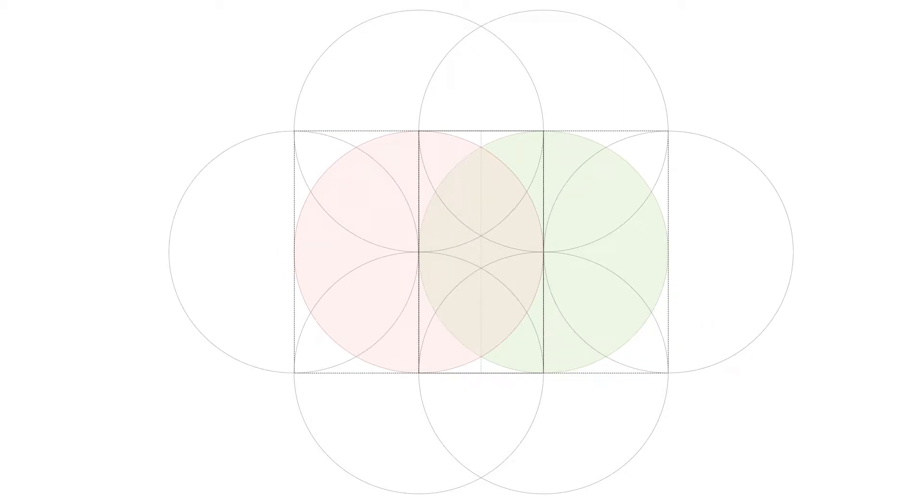So wherever a circle crosses a circle or a vesica is formed, we're going to use those points as our geometric points of reference.